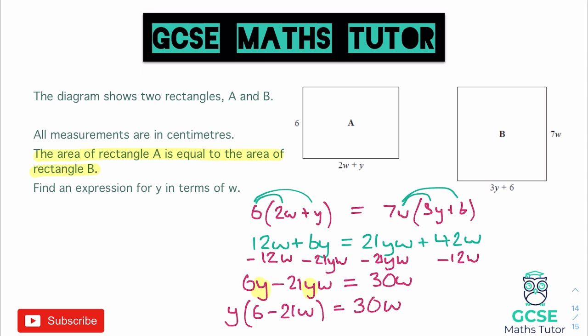If we do that, our final answer would say Y is equal to 30W divided by 6 minus 21W. Also notice I've gotten rid of the brackets there, but you could leave the brackets in. It wouldn't affect your answer; it'd be absolutely fine to leave your brackets. There is our expression for Y in terms of W.